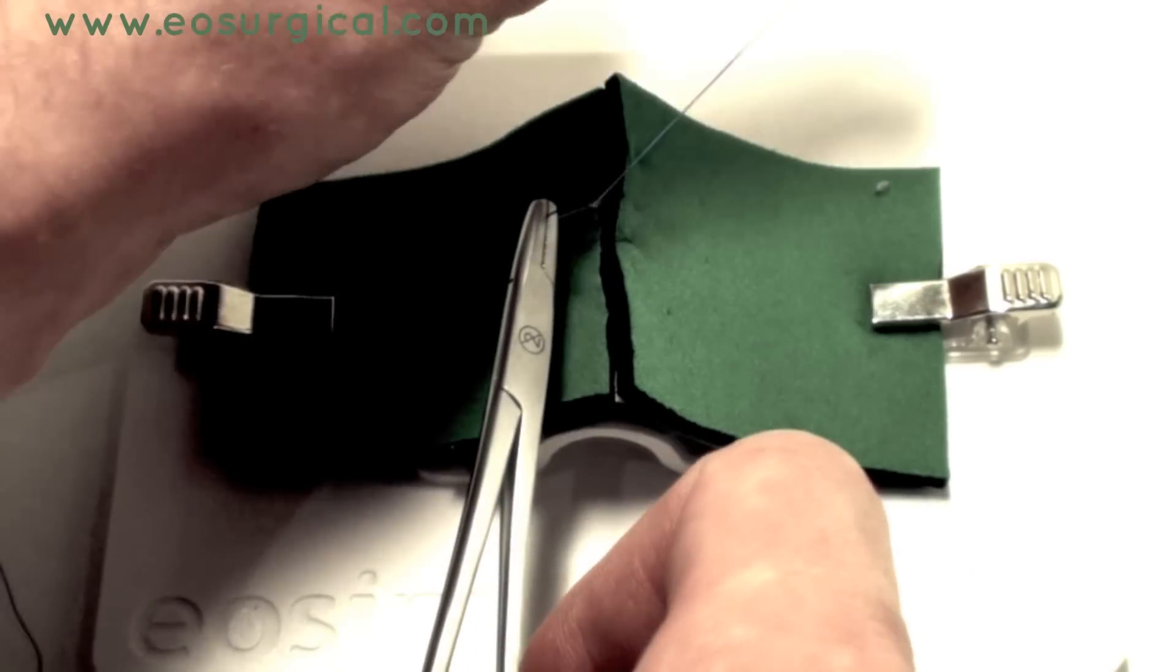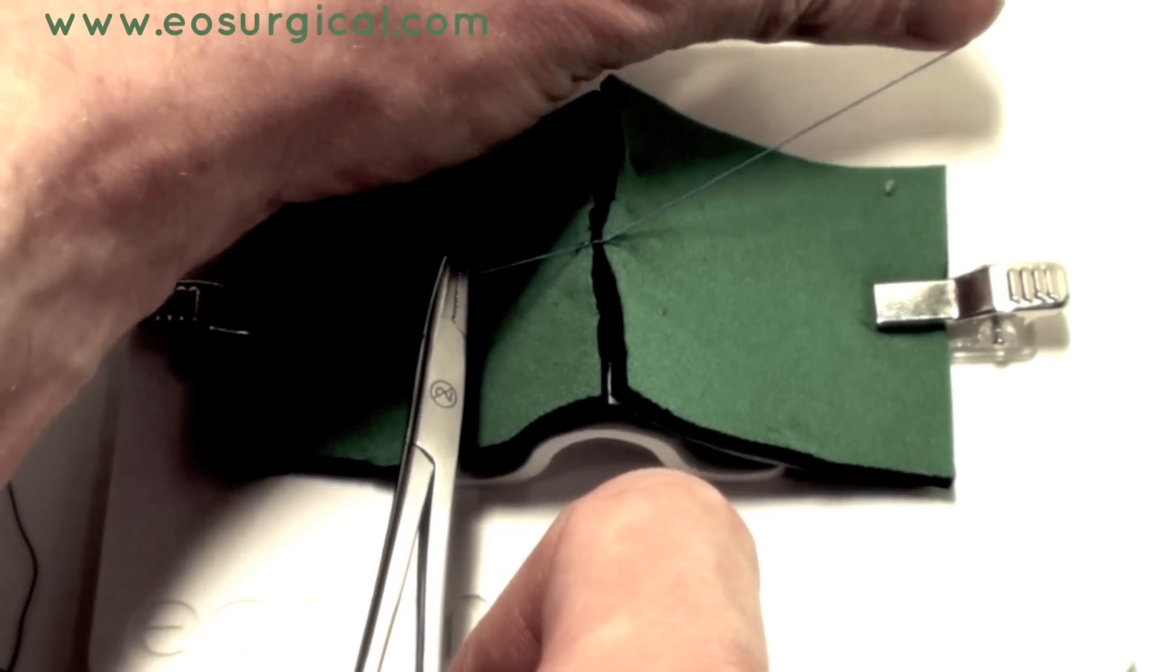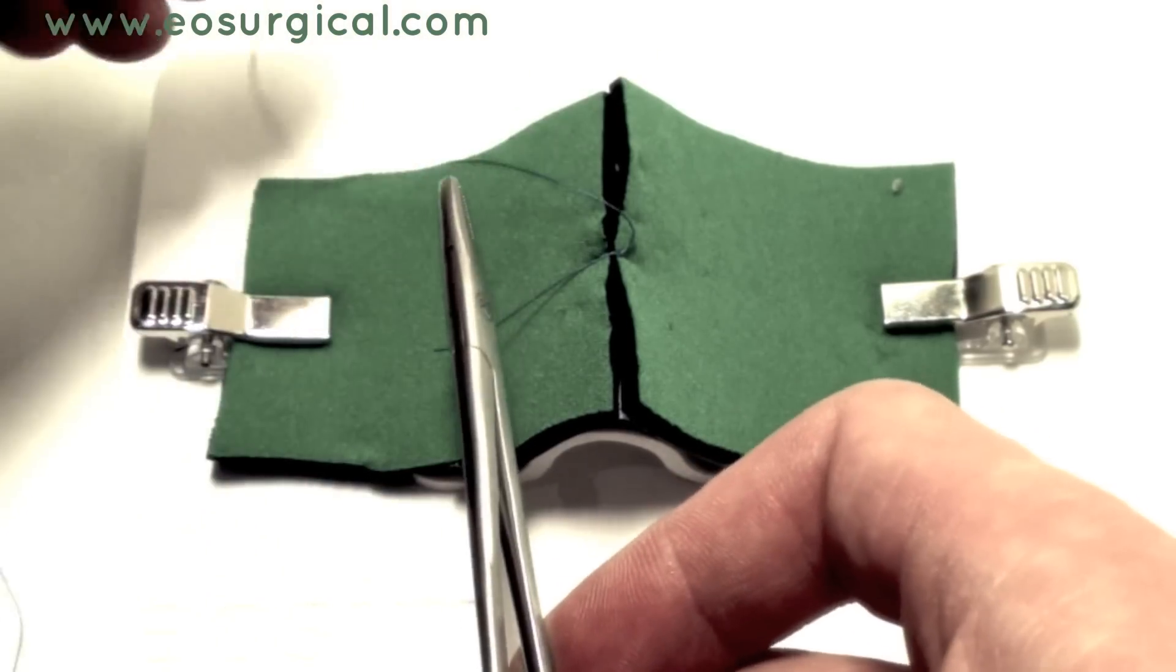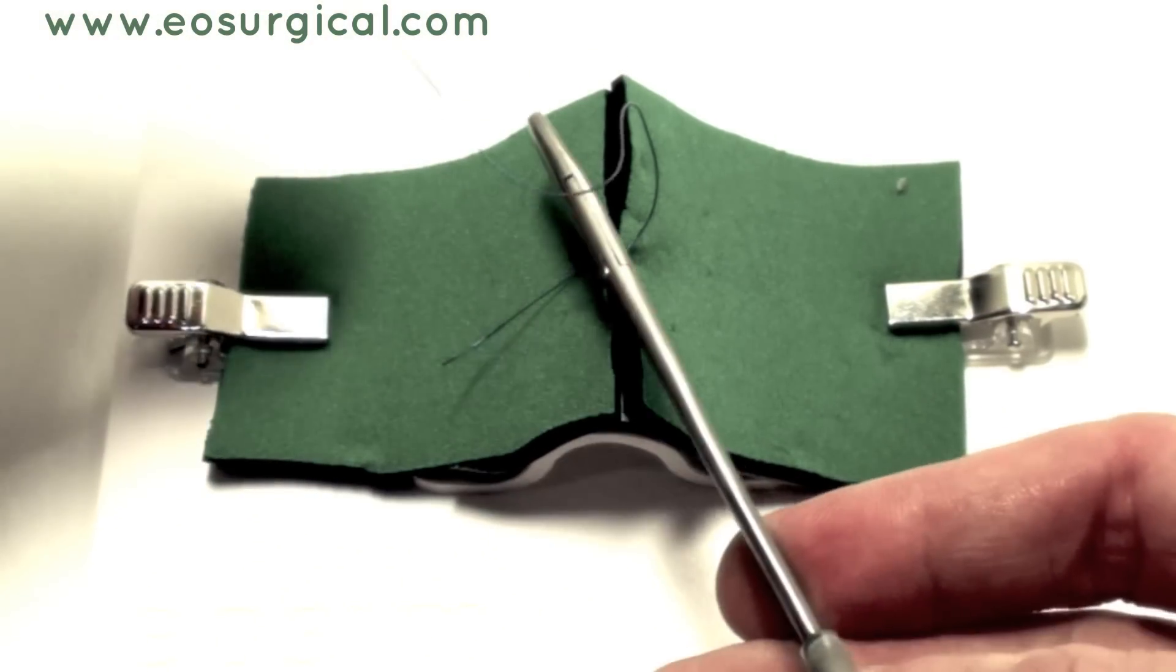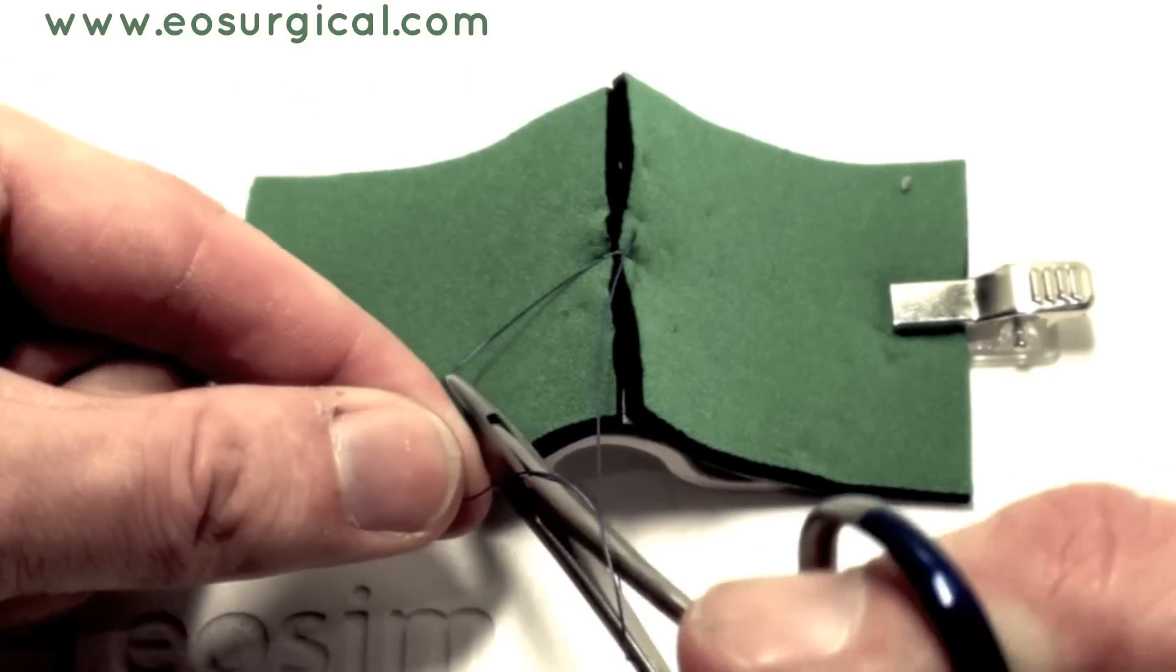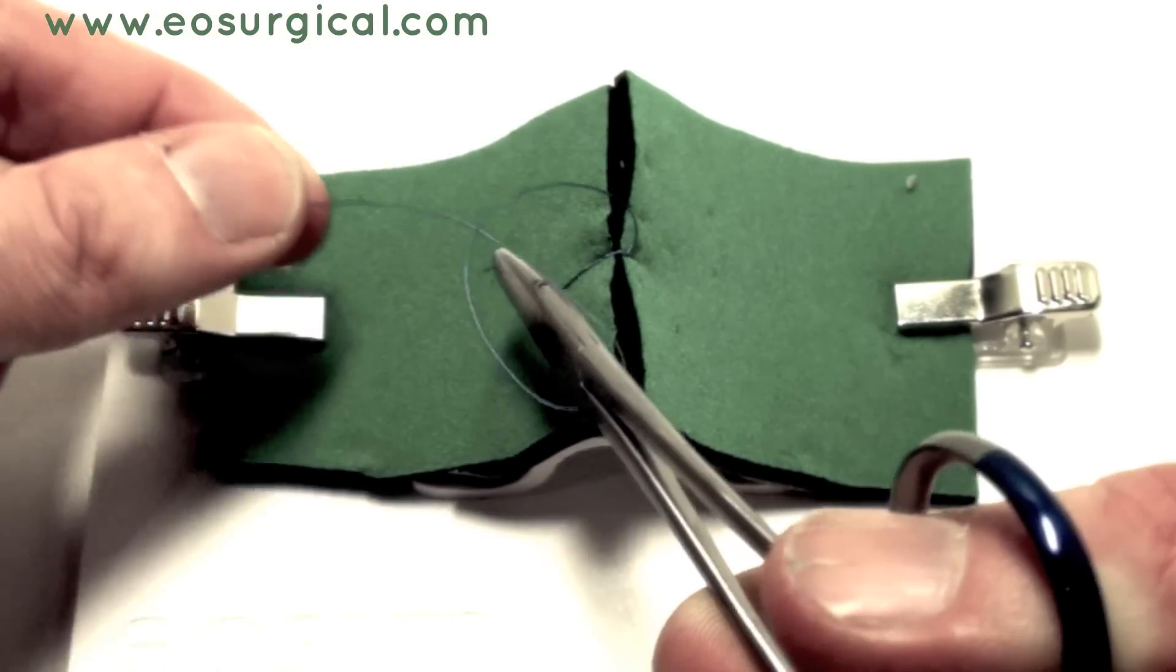Now, when you pull the short end through the knot, you need to cross your hands over. Looking from the other side, from the short end to the long end, wrap it around once this time, and pull the short end through, again crossing your hands.